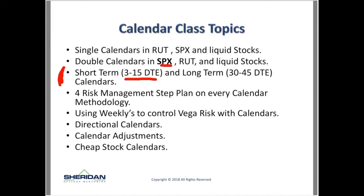We'll talk about short-term calendars, defined as where the shorts are 3 to 15 days from expiration, and long-term calendars where the shorts are 30 to 45 days from expiration. For every calendar methodology, including some of the most successful ones we use in the community, we'll give you our four-step risk management plan: how to set it up based on current market conditions, what's the profit target and max loss, when to adjust, and how to adjust.